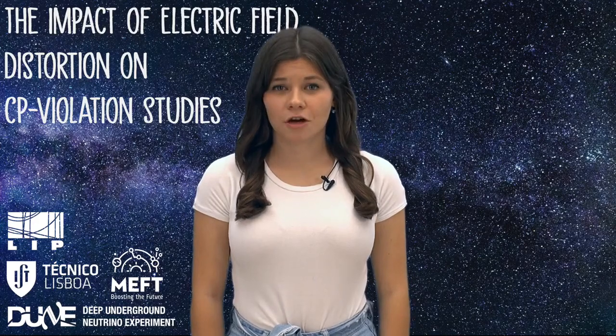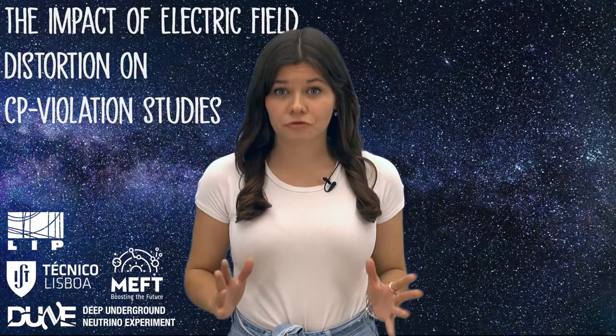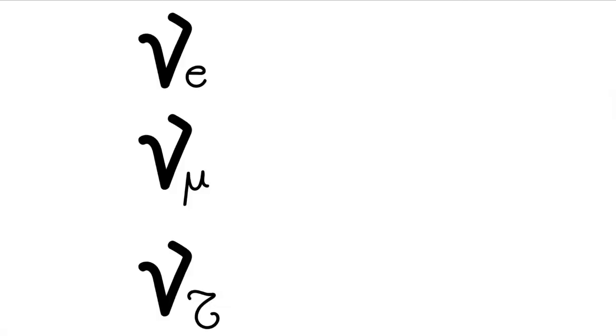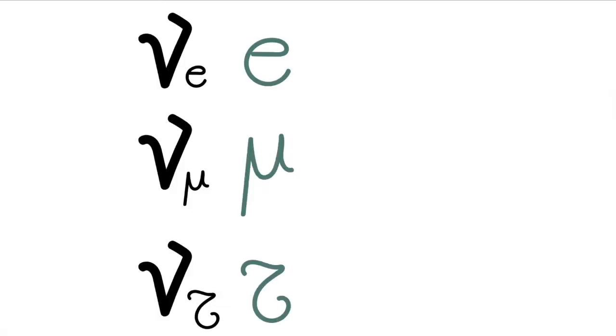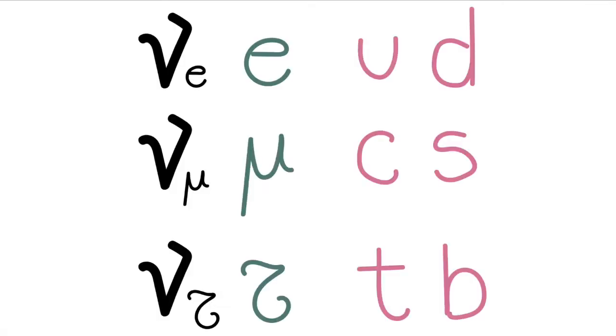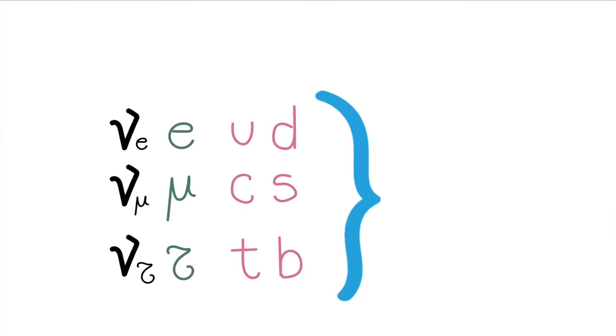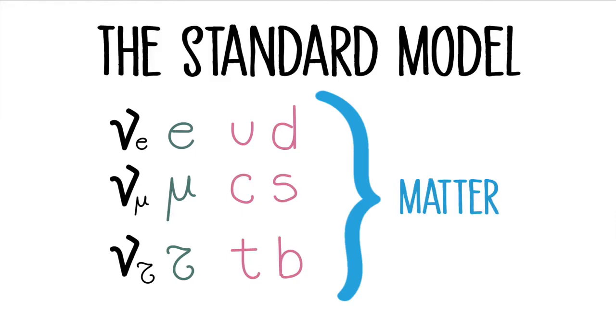My name is Gloria and I'm here to talk to you about neutrinos. This may sound a bit like sci-fi, but neutrinos are actually elementary particles. They're one of the types of building blocks of the universe. With the others such as electrons, muons, taus, and the quarks, they form what we call matter.